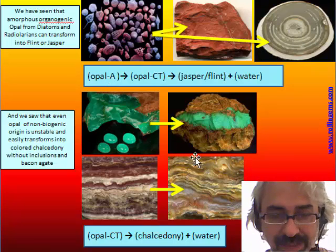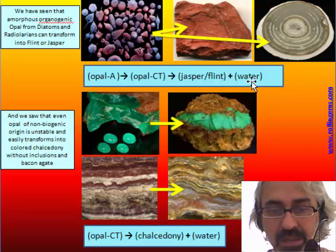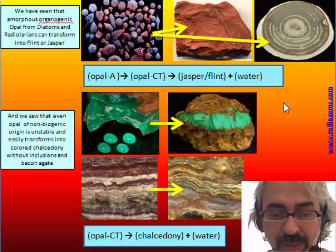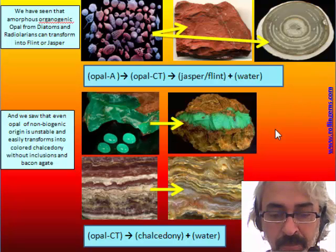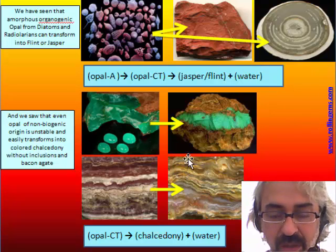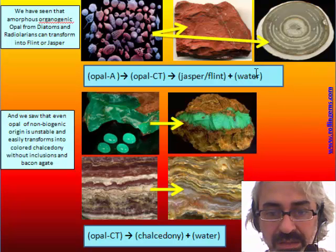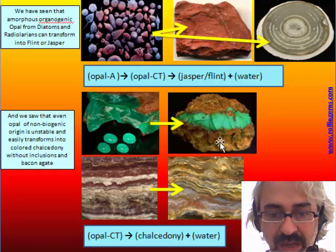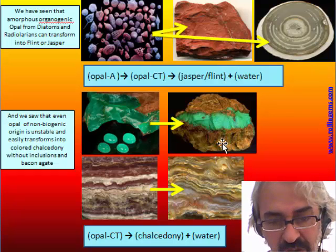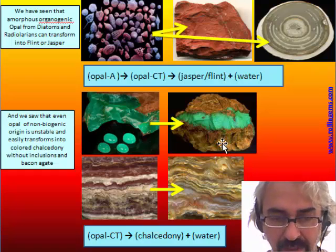Probably the difference is mostly dependent on the pH of the solution, because the composition we know is the same, and there is a difference between Jasper and Chalcedony in the shape of the microcrystals.